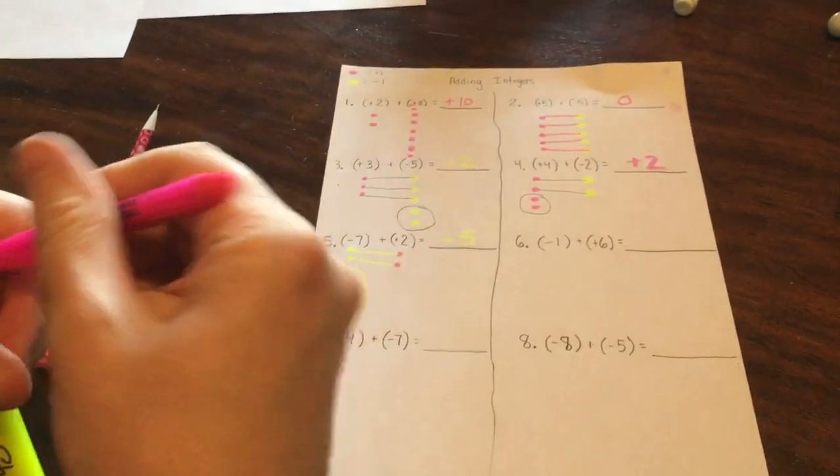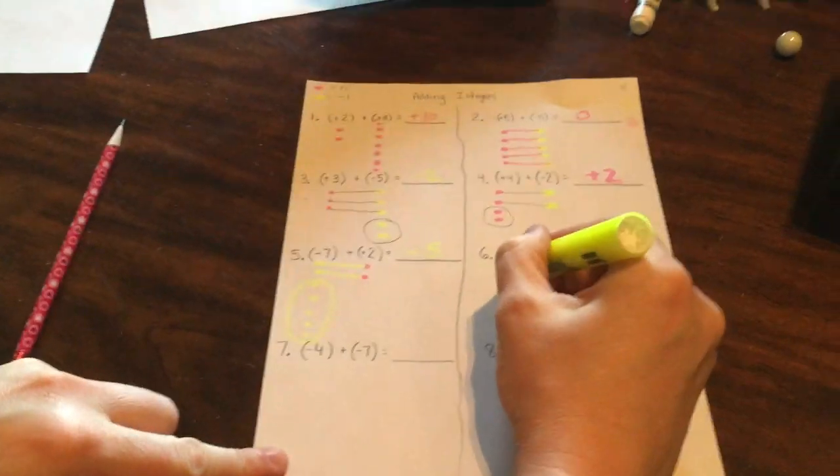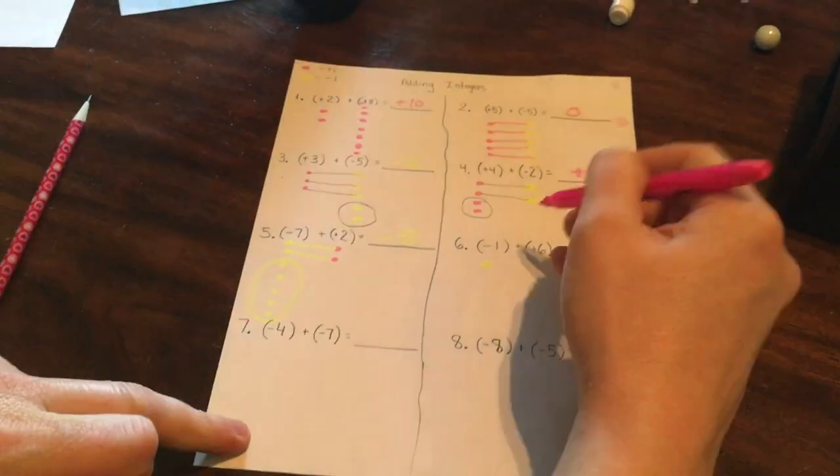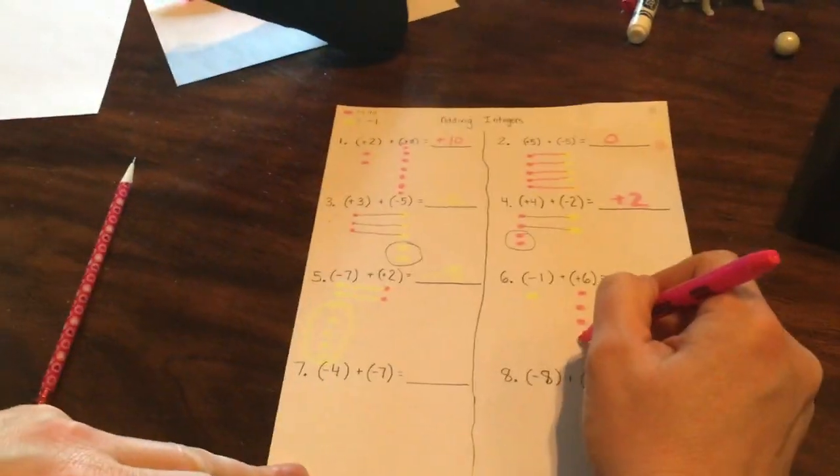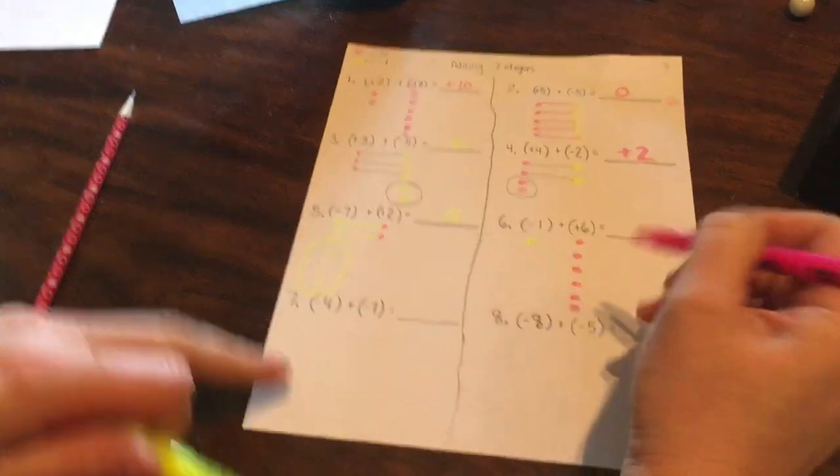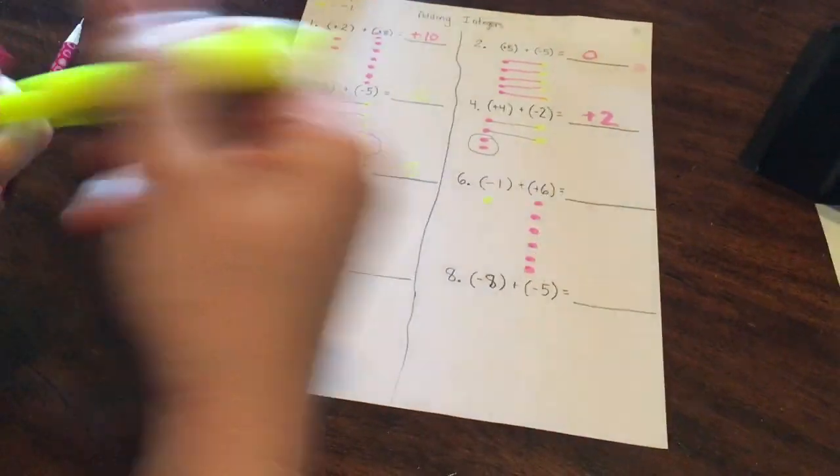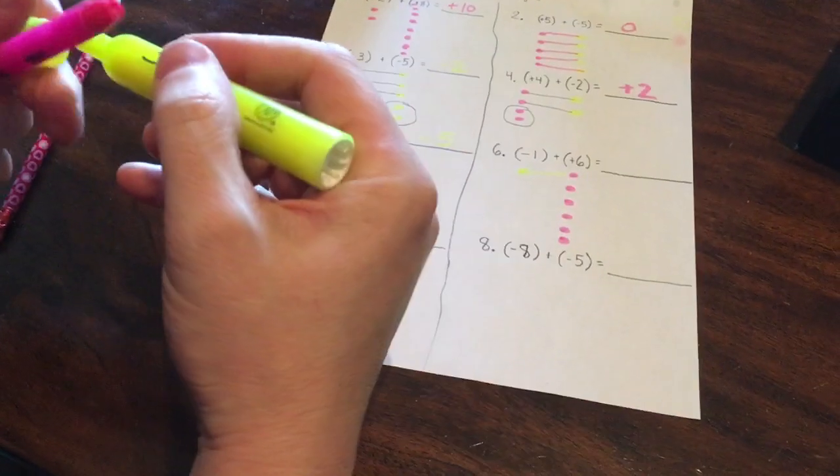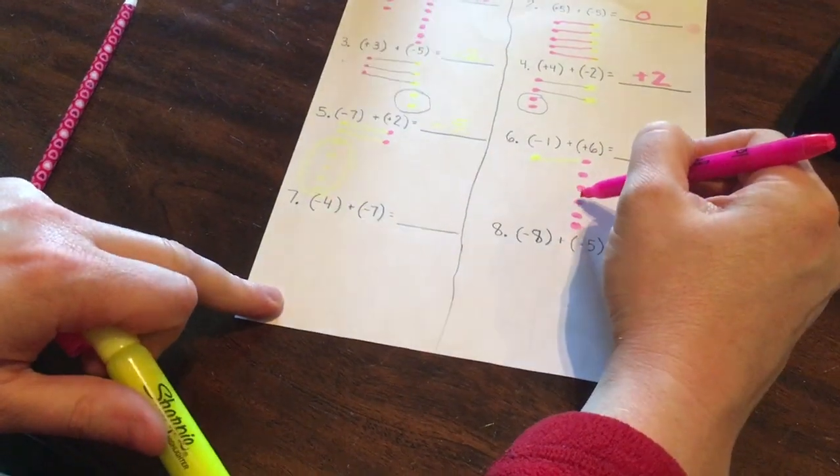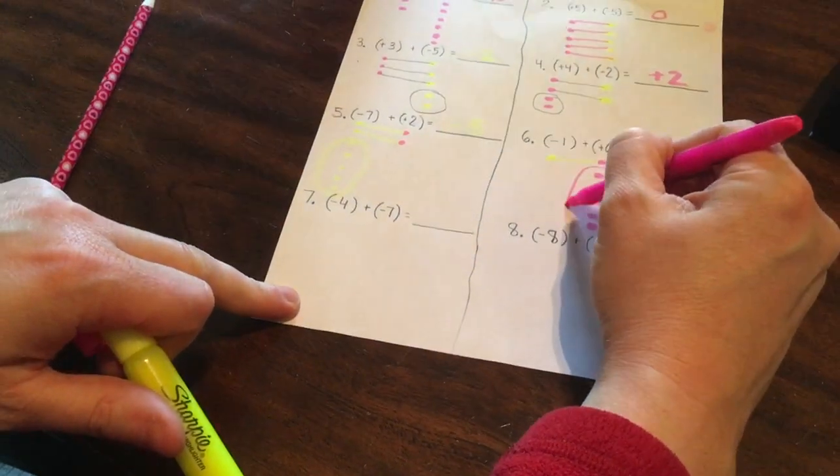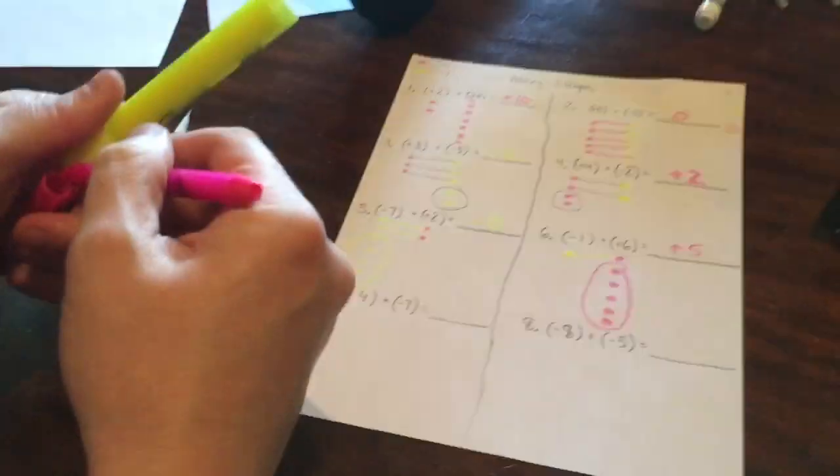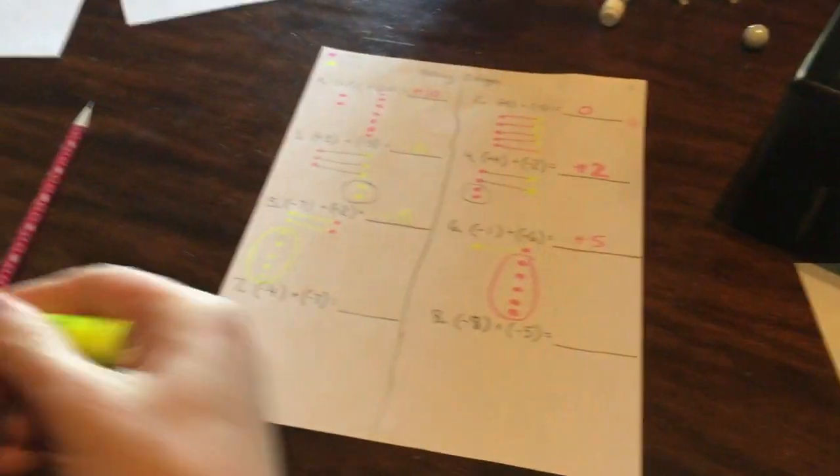So here is negative one. There's positive six. So now I'm just trying to match up my zero pairs. What do I have left? One, two, three, four, five, my five positive because we look at our legend up there. It's important that we remember which color we made positive and which color we made negative.